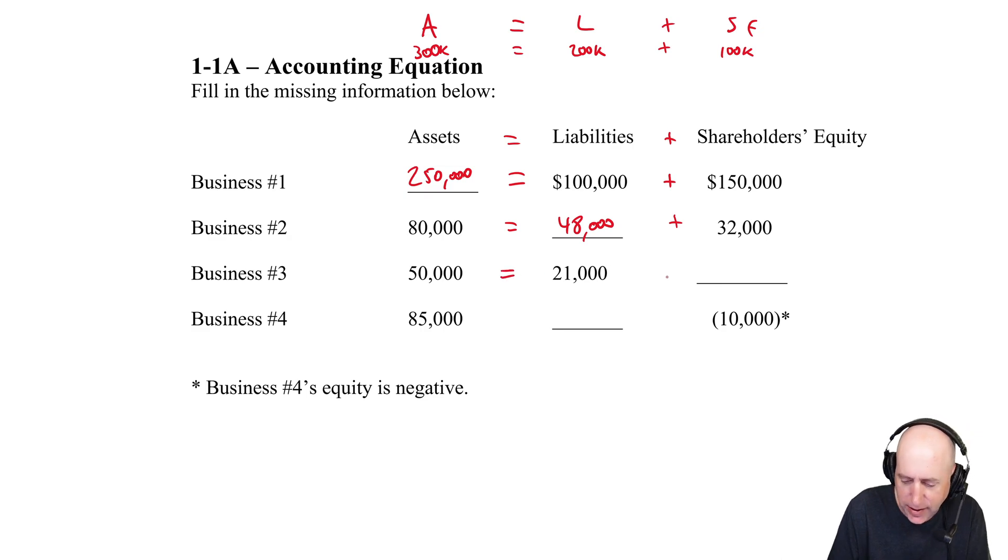We do the same thing with business three. Assets equals Liabilities plus Shareholders' Equity. I know the assets are 50, if the liabilities are 21, the equity has got to be 50 minus 21, which is $29,000. Double-checking: 21 plus 29, yes indeed it is 50. Things are balancing - this is what makes a balance sheet balance.